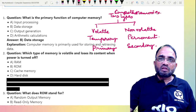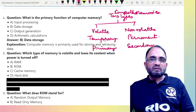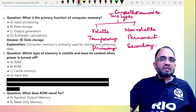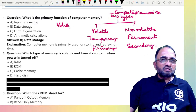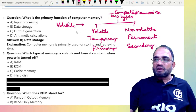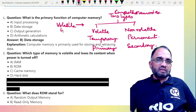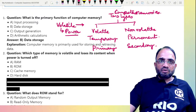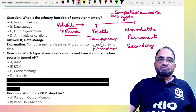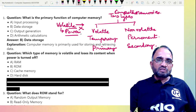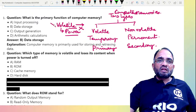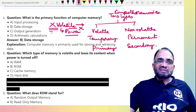So computer memory is divided into volatile and non-volatile, temporary and permanent, and primary and secondary memories. Volatile memory retains data only when power is supplied. As soon as there is a power shutdown or cutoff, whatever data is present in the volatile memory gets erased without any notice.